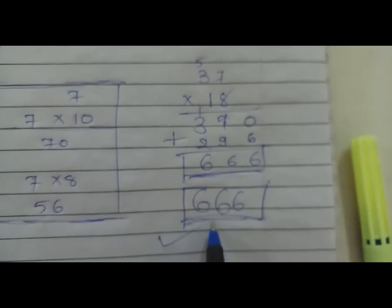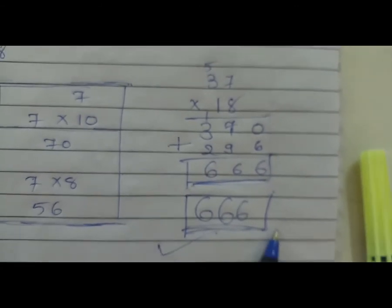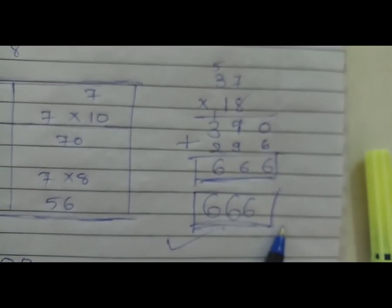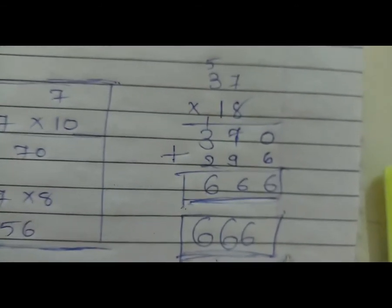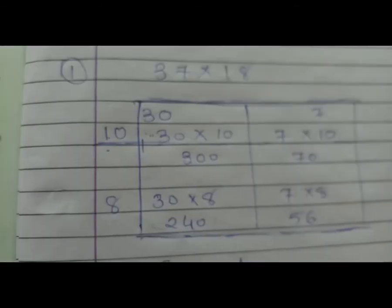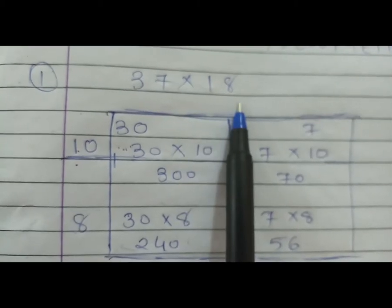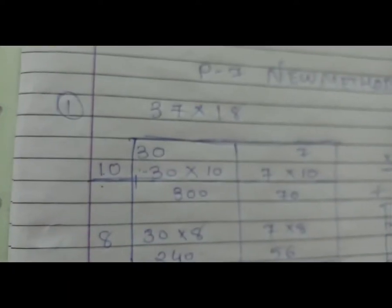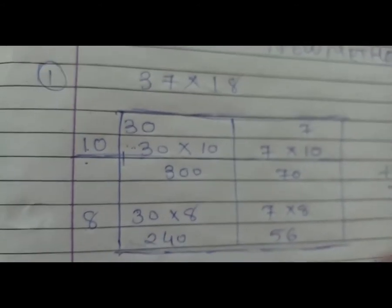So, this is the old method. So, this is the new method of the multiplication sum — two digits with two digits. Now, new method of this multiplication sum.